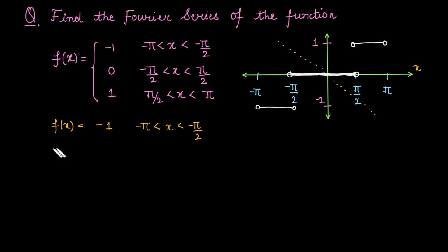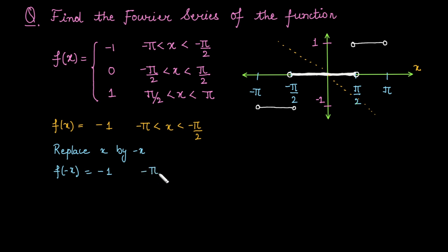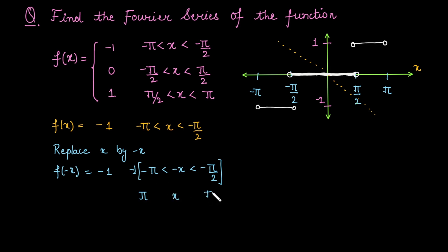Step one: replace x by negative x. So f(−x) = −1, and the interval becomes from minus pi to minus pi by 2 with x replaced by −x. Since the interval is given for x (not −x), we multiply the interval by −1 to get positive pi by 2 to positive pi. When multiplying by a negative, the inequality signs change direction.